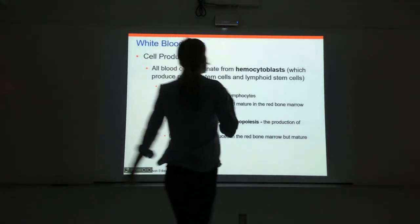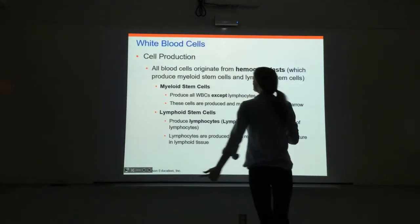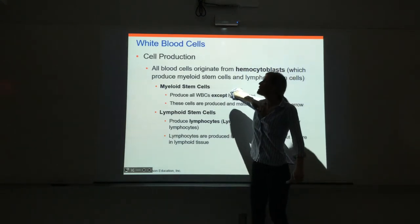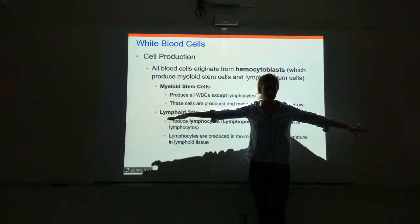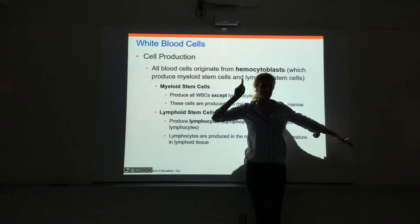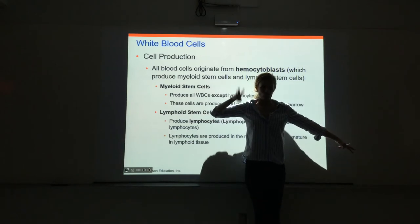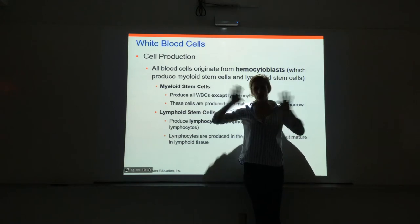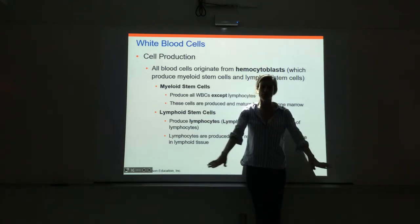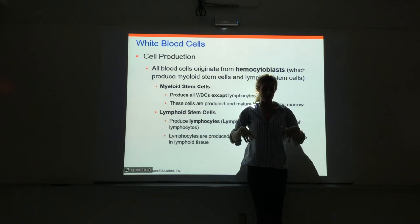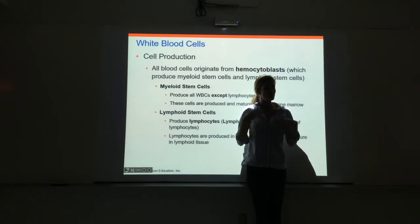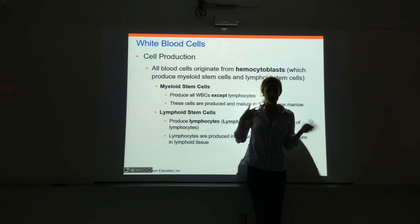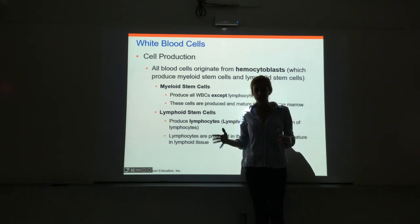We're talking about formed elements — red blood cells, white blood cells, and platelets. We talked about red blood cells extensively, and we're solid on those. We're in the middle of white blood cells right now — we talked about all the different kinds, their functions, how to identify them, and what a differential is.